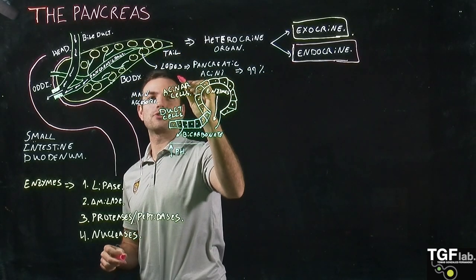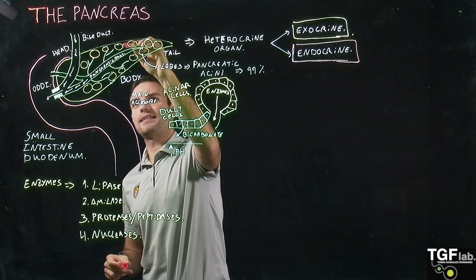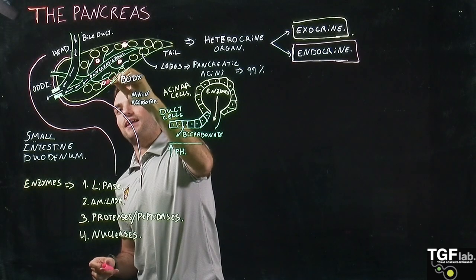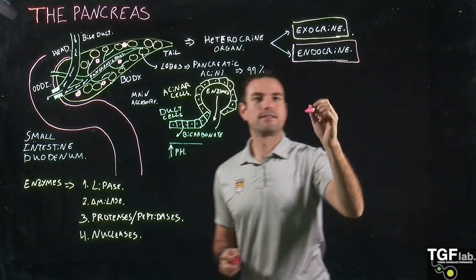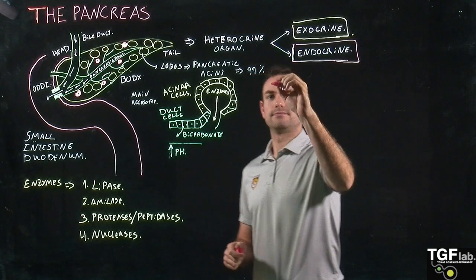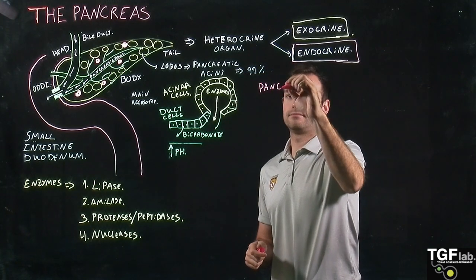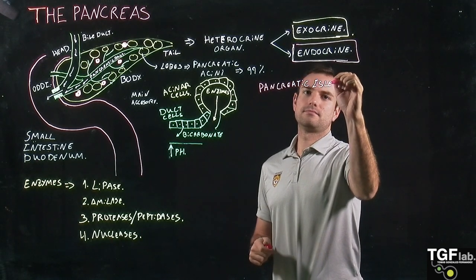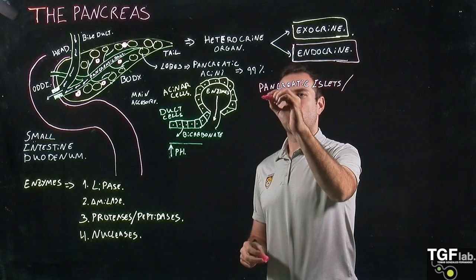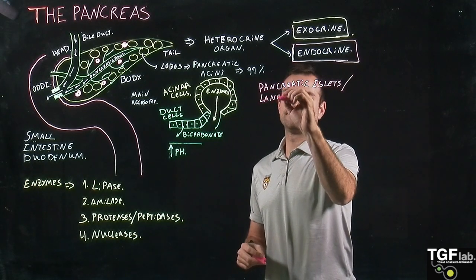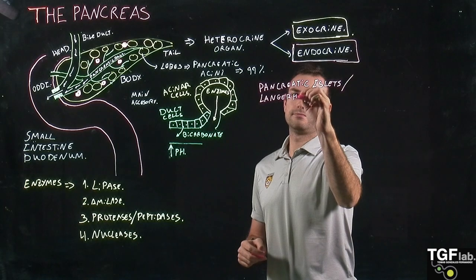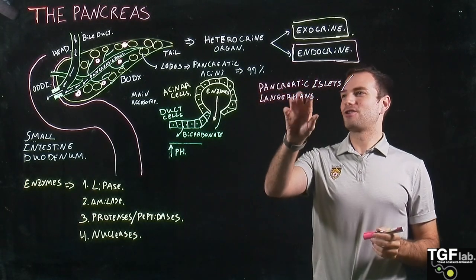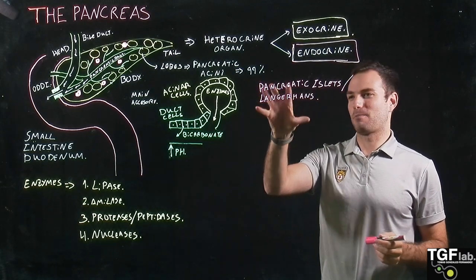The endocrine function, in comparison to the lobes with the pancreatic acini, involves the pancreatic islets, which are also called the Islets of Langerhans. These are going to regulate the glucose in our body.